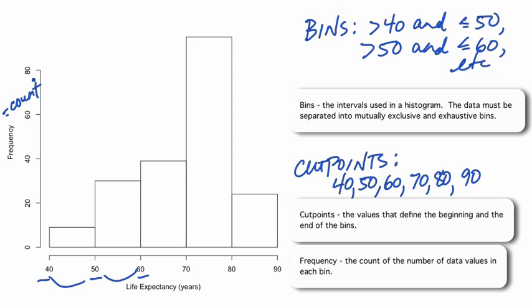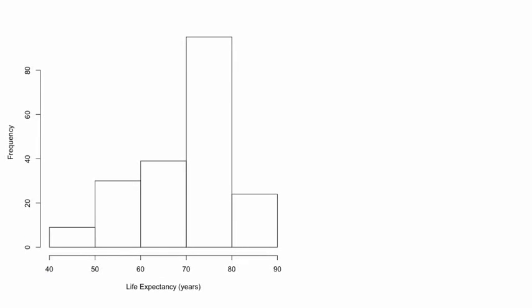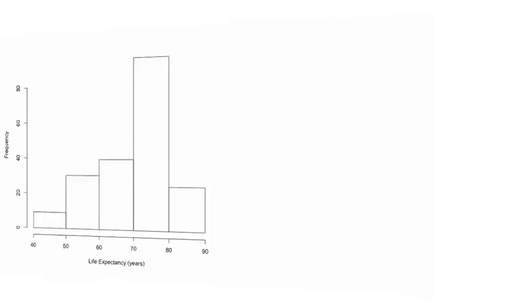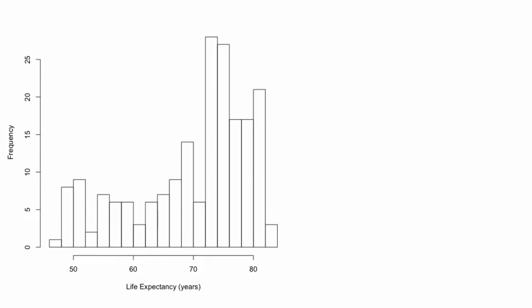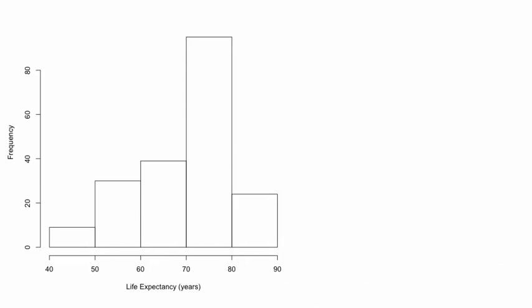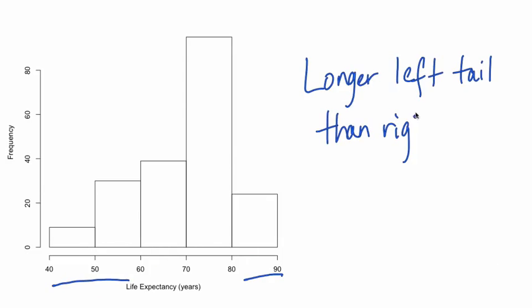Note that we can't read the actual data values from a histogram. From our first bin, we know that there are 9 countries or territories with life expectancies greater than 40 years and at most 50 years, but we can't tell from the histogram what the exact value of the minimum life expectancy is. The width and number of bins can be any convenient value; however, it is possible to dramatically change the appearance of a histogram with the choice of bin size, particularly when the number of data values is small. For example, if we change the bins to cover only a 2-year span, the histogram appears more noisy with more variation in the frequencies among bins. The tails of a histogram are the bars in the far left and right where the extremes of the data values are. Life expectancy has a longer left tail than right tail, corresponding to countries with relatively low life expectancies.